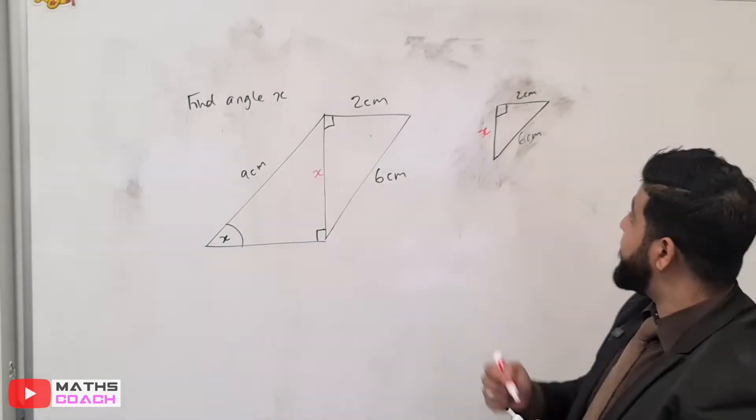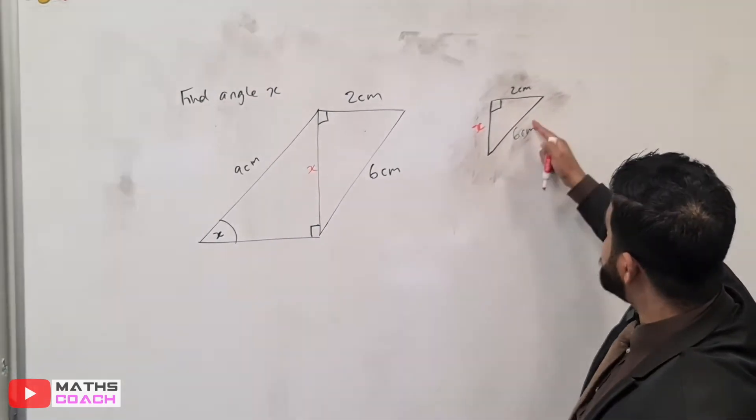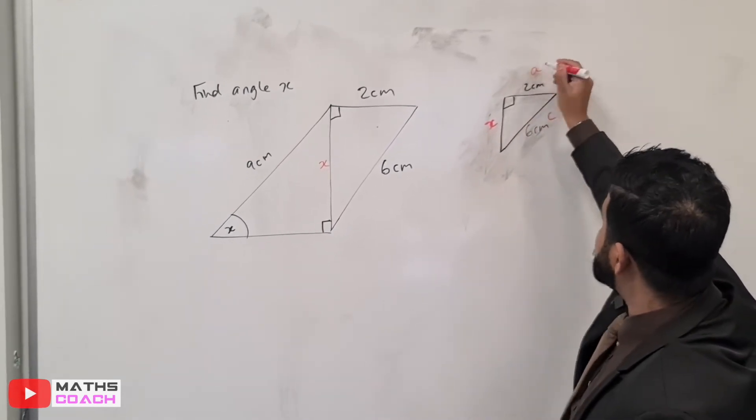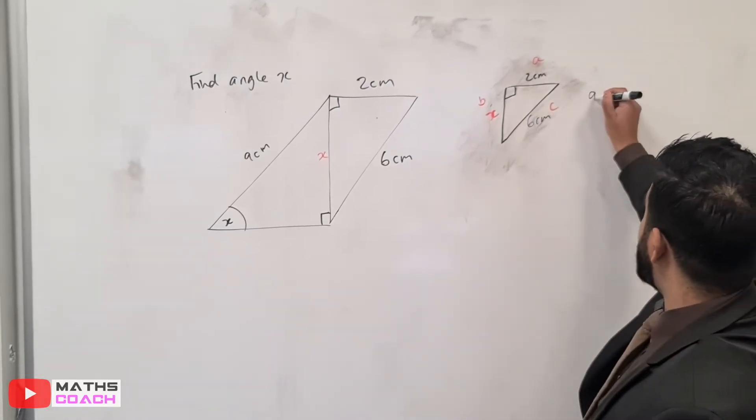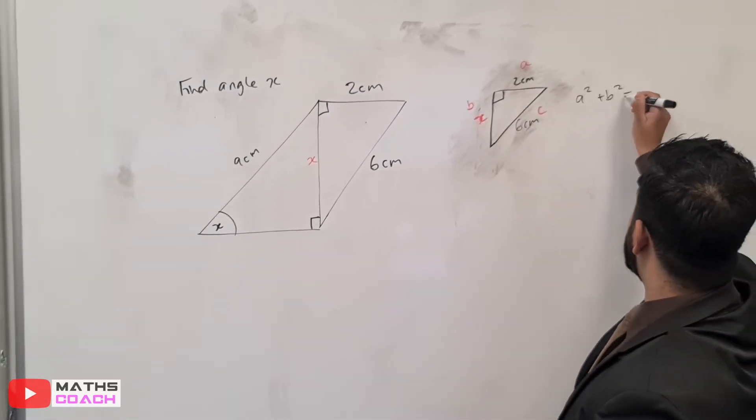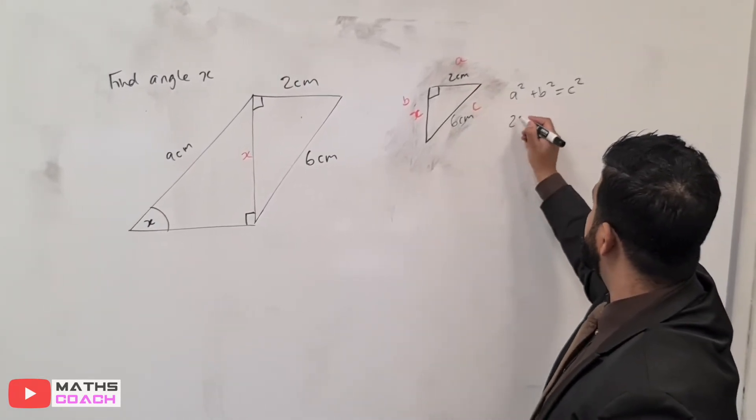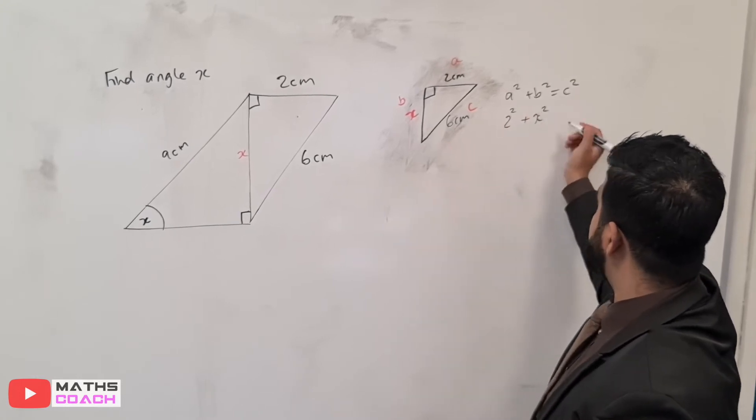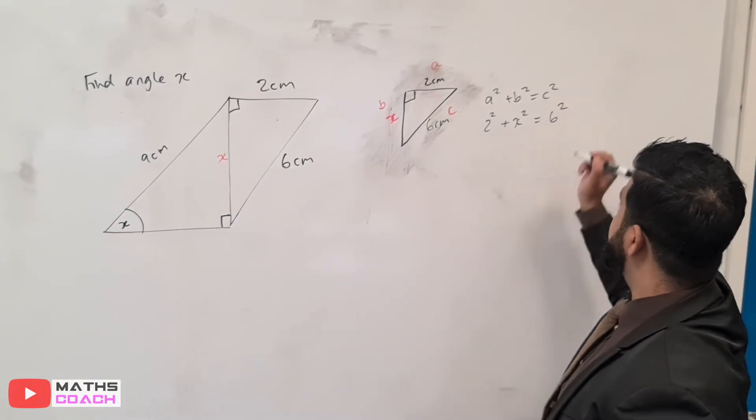If you remember, Pythagoras is labelled A, B, and C, and the hypotenuse is always opposite the right angle here. So that's going to be C, and that can be A, and that can be B. So let's apply Pythagoras' theorem. A squared plus B squared is equal to C squared. We now have A, which is two squared. B is what we're finding, so let's call that X squared. And C, we are given the hypotenuse, so that will be six squared.